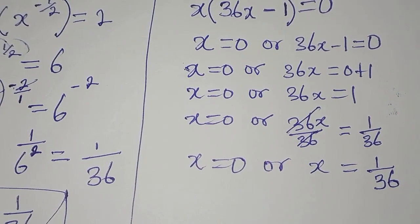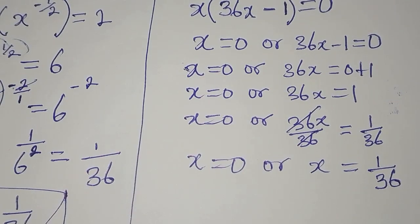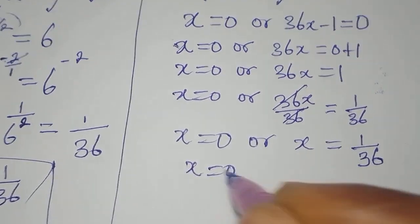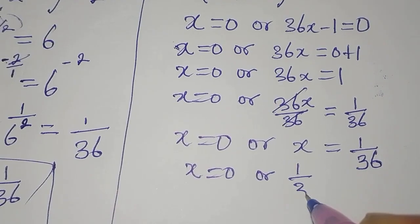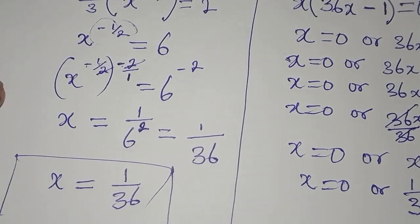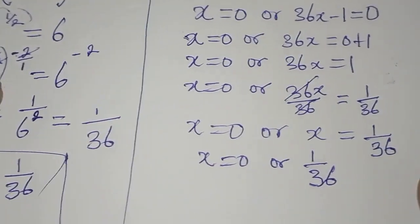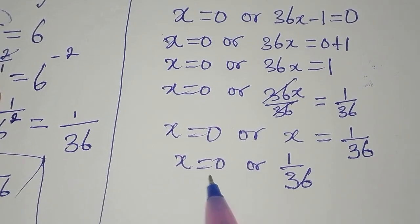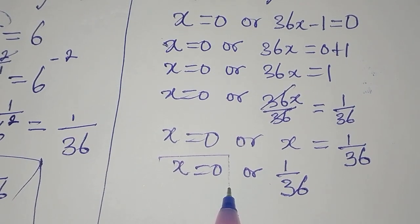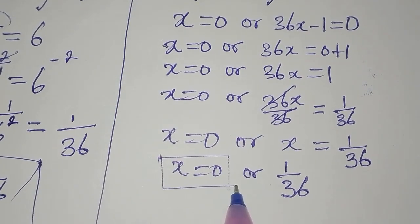What do you notice? This second method gave us two solutions: x equals 0 or 1/36. The first method gave us x to be 1/36. The second gave x to be 0 or 1/36. But x to be 0 will be rejected in this case.